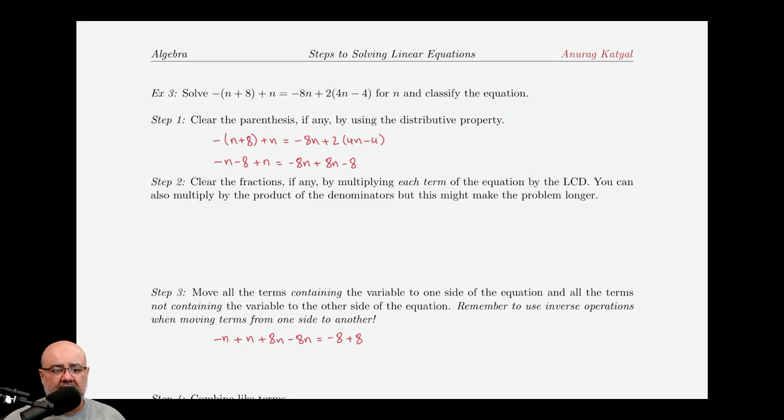As we've done already a couple of times, we clear the parentheses first. The negative 1, or the negative, has to get distributed into the n and the n plus 8, which would give us negative n minus 8.